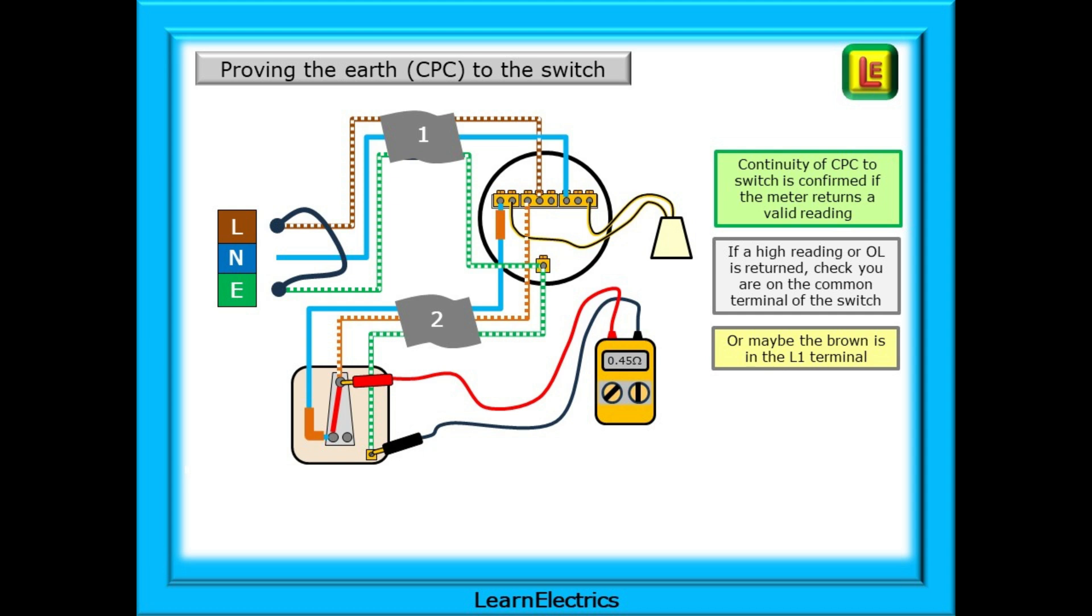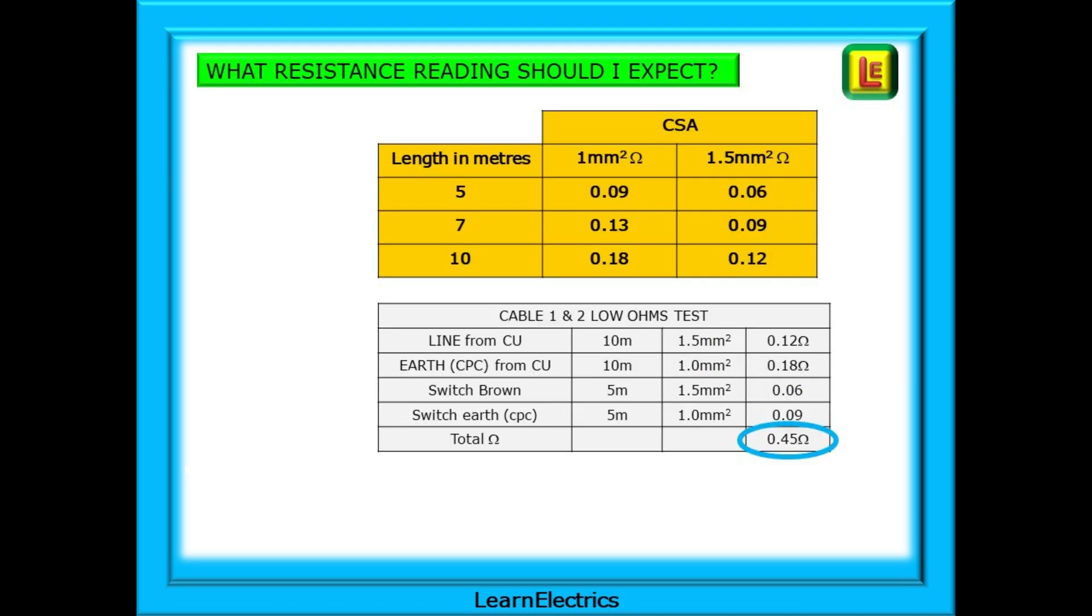If a high reading or OL is returned, check that you are on the common terminal of the switch. And what resistance reading should we expect? Let's go back to our table and here is the target resistance.